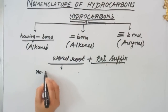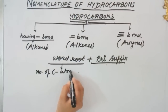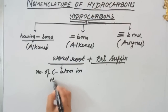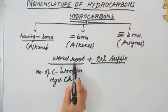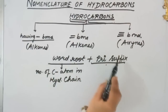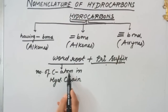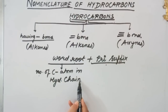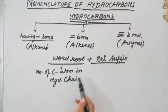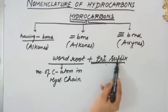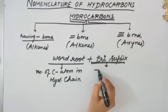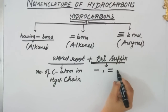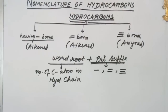So we have two parts in the naming: the word root and the primary suffix. The word root tells you about the number of carbon atoms in the hydrocarbon chain, and it will change according to the number of carbon atoms present. The primary suffix is also very important — it tells you about the single bond, double bond, or triple bond present in the carbon chain.